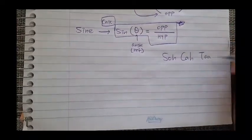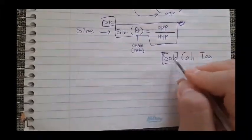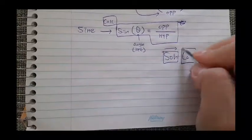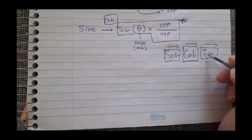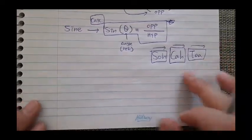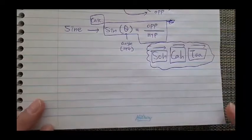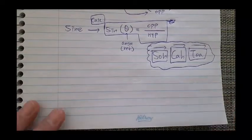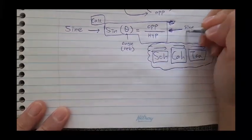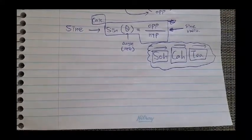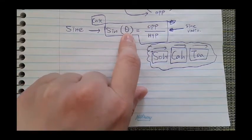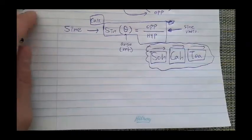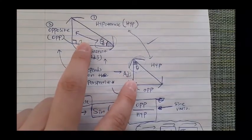You may have learned this as SOH-CAH-TOA — it's a way of remembering: SOH means sine is opposite over hypotenuse; CAH means cosine is adjacent over hypotenuse; TOA means tangent is opposite over adjacent. In either case, what I wrote is known as the sine ratio. Whatever right angle triangle with different measurements you may have, as long as you calculate opposite over hypotenuse, it will always equal sine of the reference angle. But first, you need to identify which side represents which.